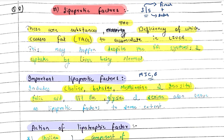Lipotropic Factors are substances the deficiency of which causes fat — TAG (triacylglycerol) — to accumulate in the liver. This may happen despite fatty acid synthesis and uptake by the liver being normal.